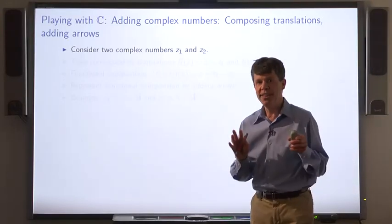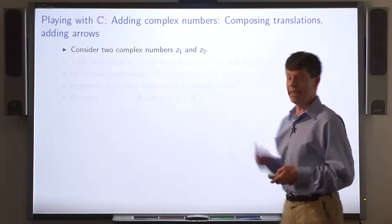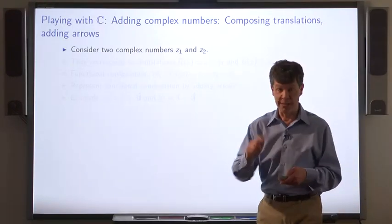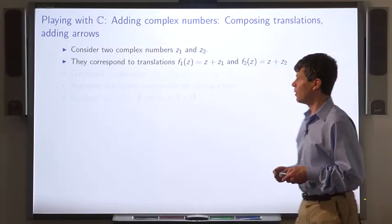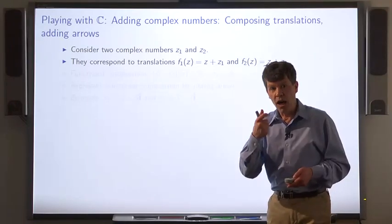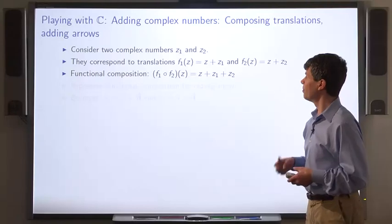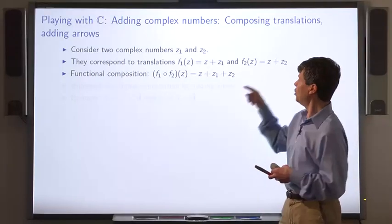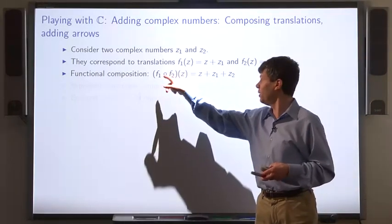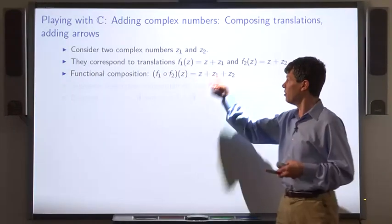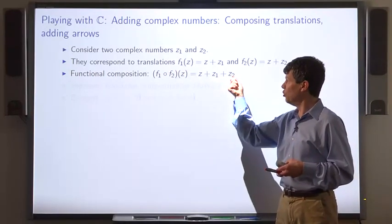Now, consider two complex numbers. Each of them corresponds to a translation. Let's take the functional composition of those two translations. So first we apply f2 to the input, then we apply f1. That's the same as adding first z2 and then z1.